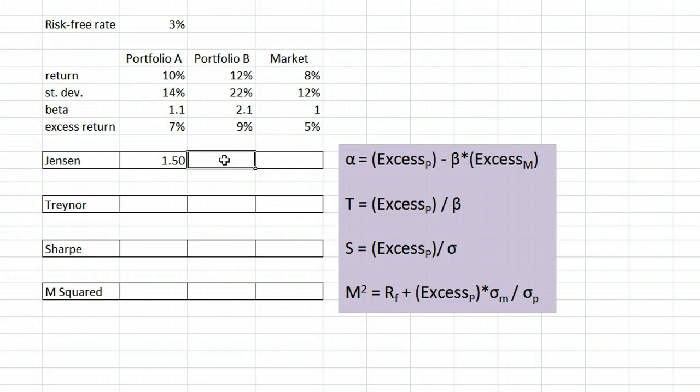Repeating the process for portfolio B, we take its excess return 9% and subtract beta 2.1 times the market's excess return of 5%. That gives us negative 1.5%. Given the amount of risk taken on as measured by beta, this portfolio returned 1.5% less than it should have.